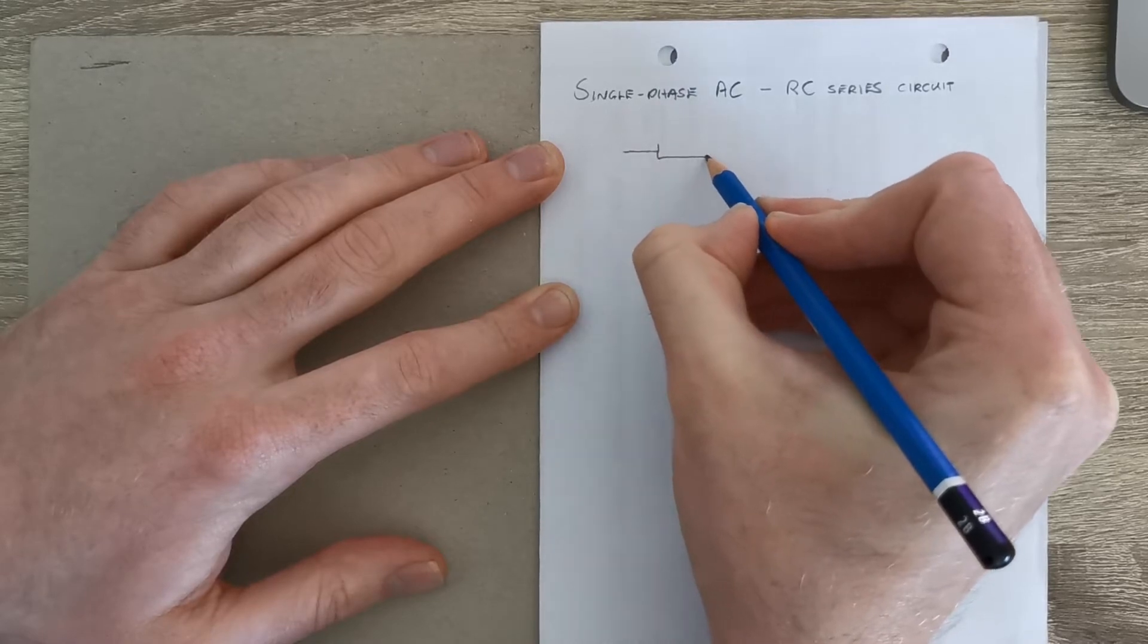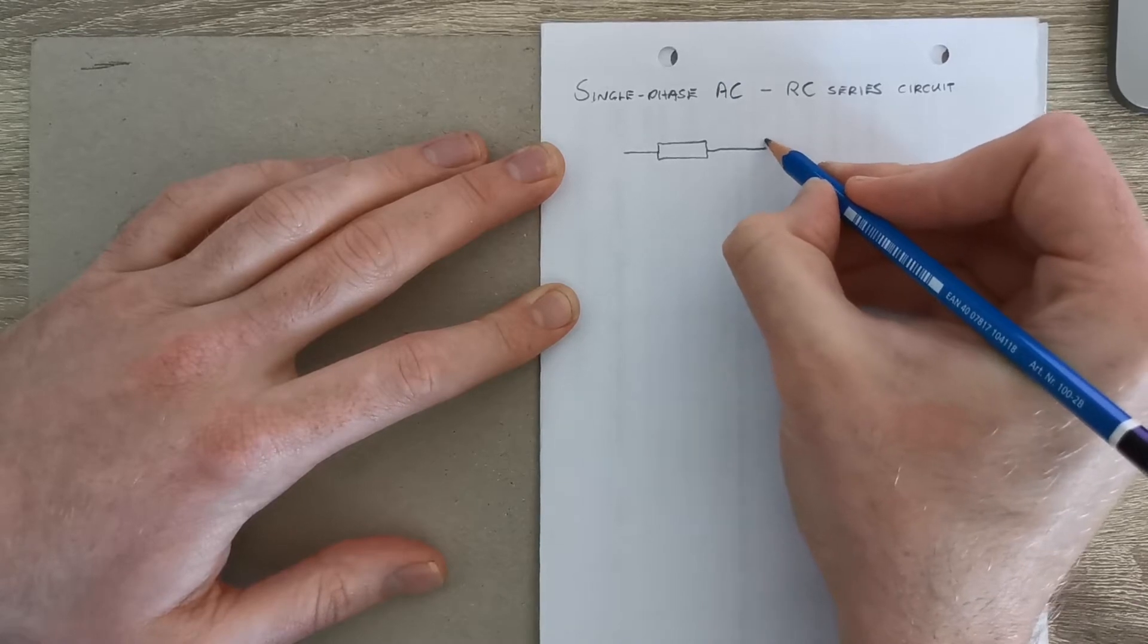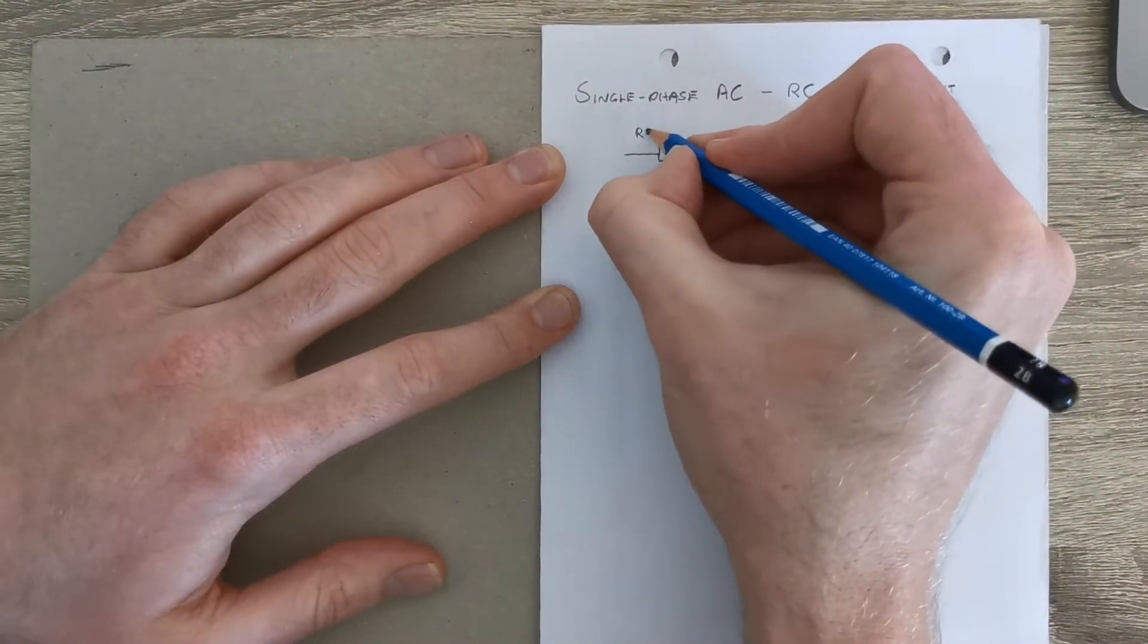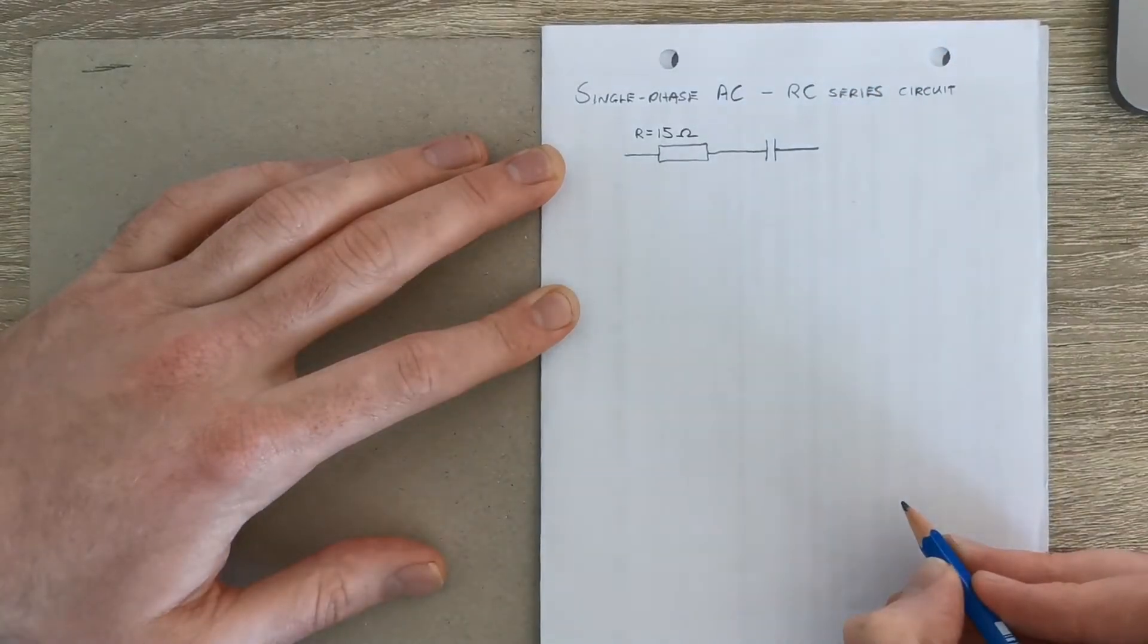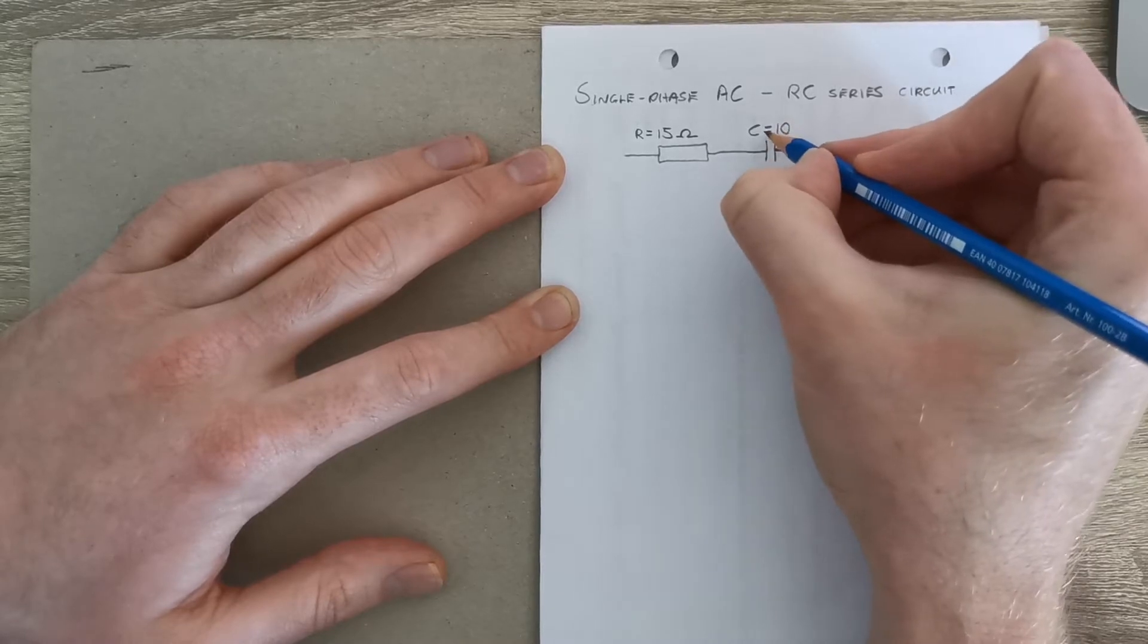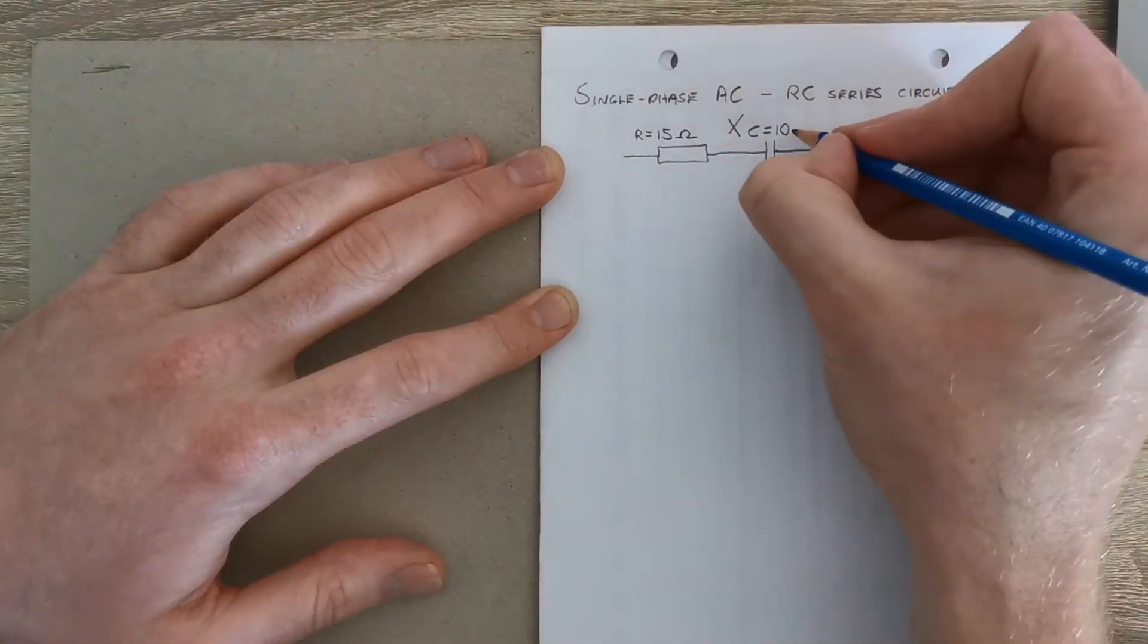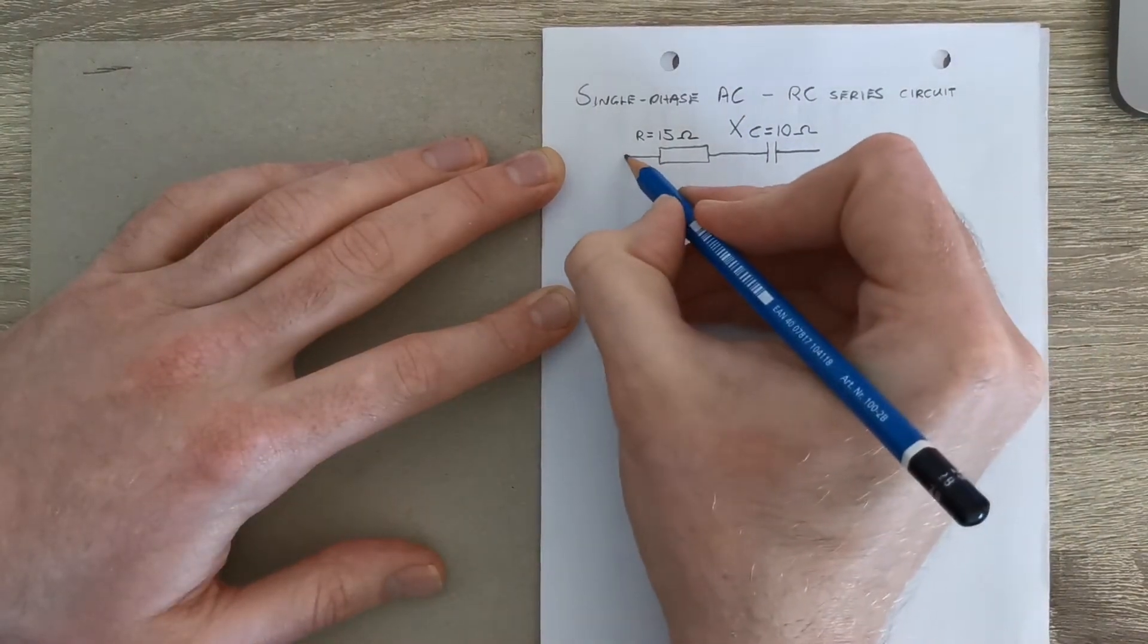RC series, which means we have a resistor connected in series with a capacitor like so, and we're given the values of resistance in the question to be 15 ohms and the capacitance, sorry the capacitive reactance, so that's actually going to be Xc, to be correct here, of 10 ohms.